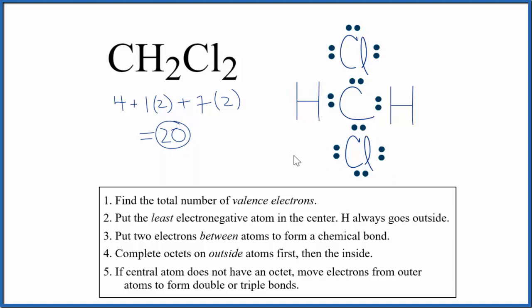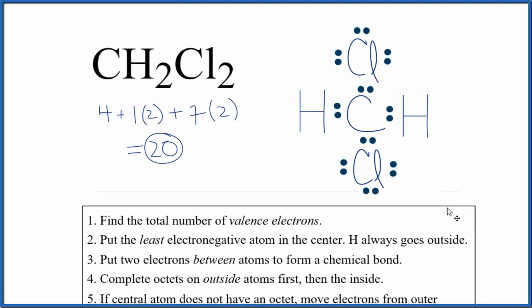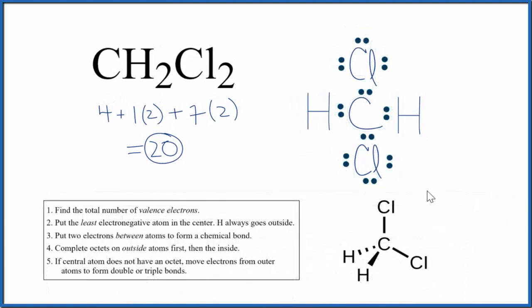This is the Lewis structure for dichloromethane, CH2Cl2. If you wanted to look at the molecular geometry, we said it was tetrahedral. So that ends up looking like this here.